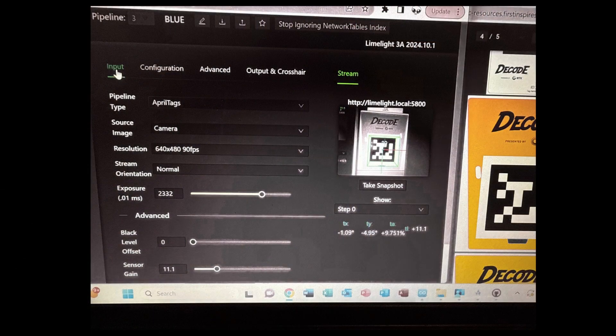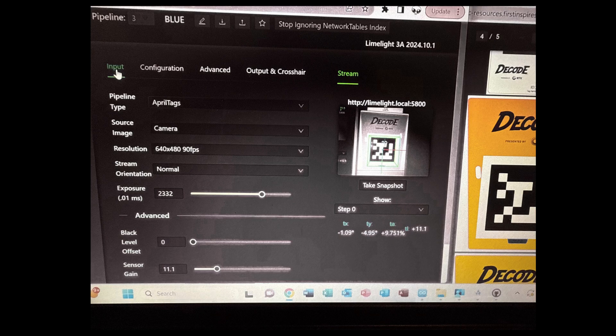We also played with a limelight camera to confirm that the randomization April tag on the obelisk can be recognized from both starting positions in reasonable lighting. The gold April tags can be seen from the launch zones.